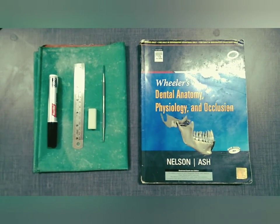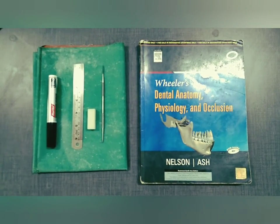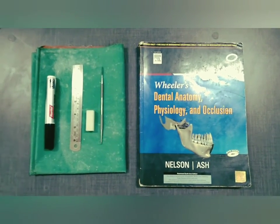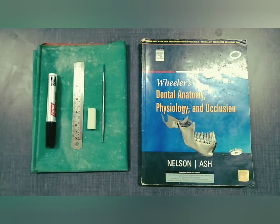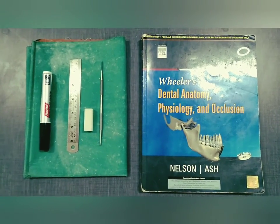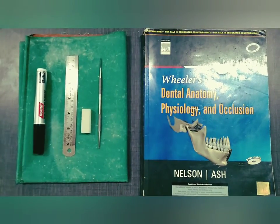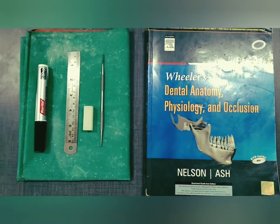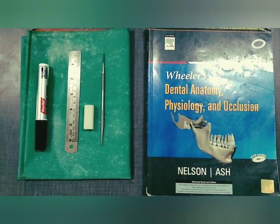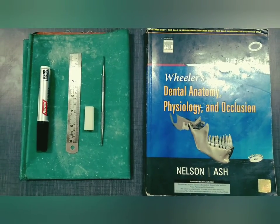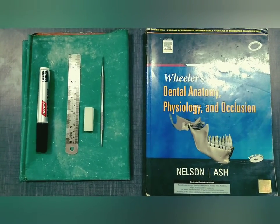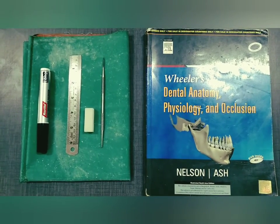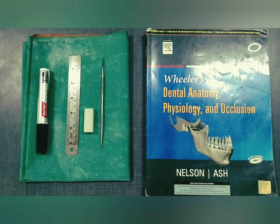These are the things we require for carving of the maxillary lateral incisor. We need a textbook showing the pictures of the maxillary lateral incisor, we need the carver, we need the wax block, we need the Macintosh sheet, we need the scale — preferably a metal scale — and we need a marker pen for self-identification of aspects. It may be buccal, it may be lingual, it may be distal or mesial. So for self-analysis and identification we need the marker pen.